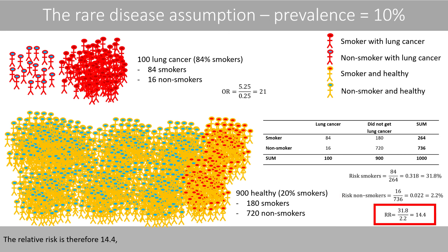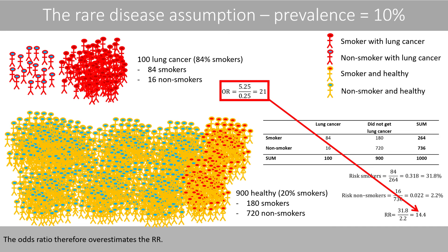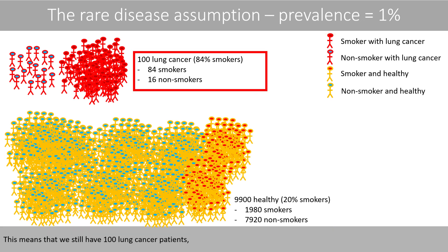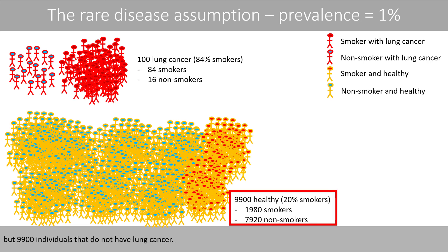The risk for smokers to get lung cancer is about 31.8%, whereas the risk for the non-smokers is 2.2%. The relative risk is therefore 14.4, which is quite far away from the odds ratio. The odds ratio therefore overestimates the relative risk. Now, suppose that the population is 10 times bigger, where the prevalence of lung cancer is now only 1%. This means that we still have 100 lung cancer patients, but 9,900 individuals that do not have lung cancer.